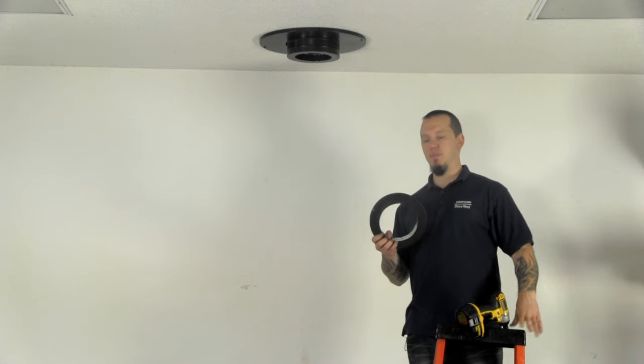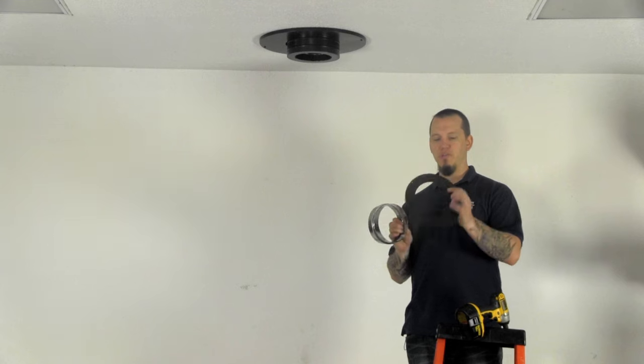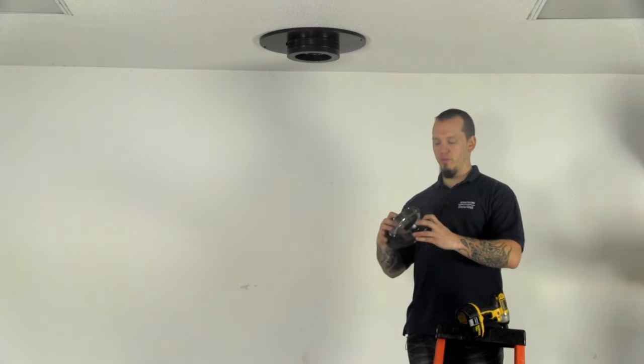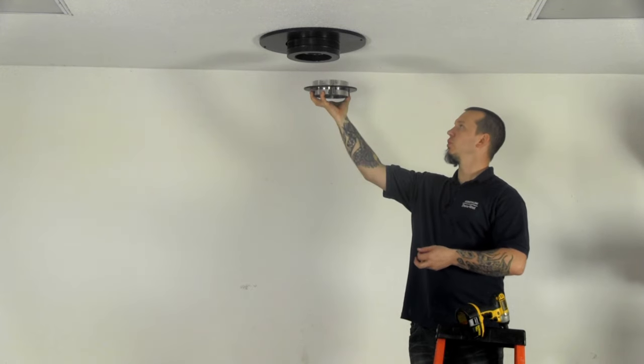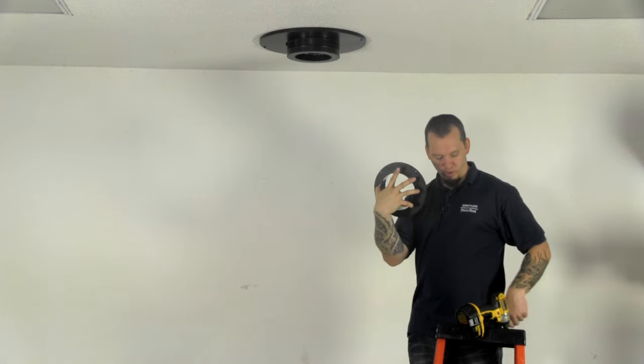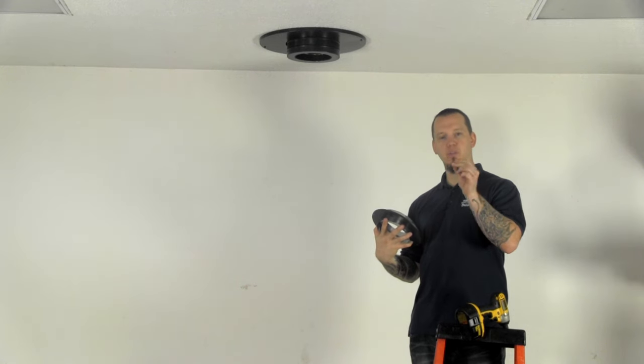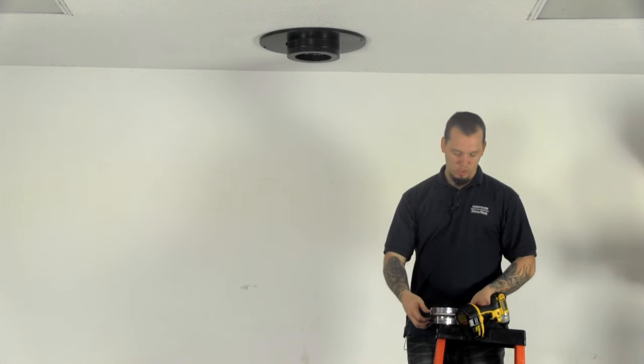Okay so our chimney pipe adapter comes in two pieces: the actual adapter itself and then the trim ring. The trim ring slides over, this is going to slide up into the round ceiling support, and then there's four pre-drilled holes in your trim ring. It comes with four hex head screws with self tappers that you're going to drive in. So we've got our drill here, just going to get it ready.